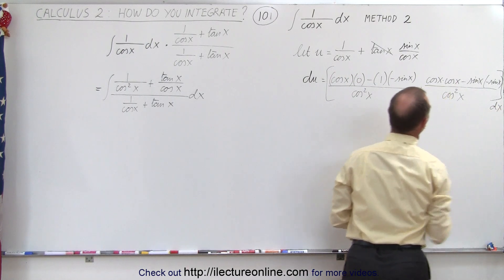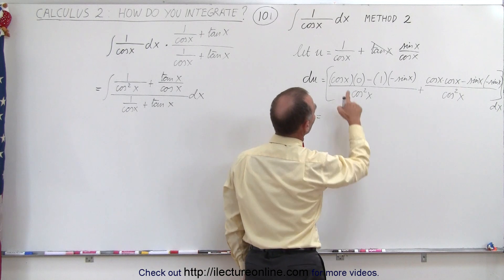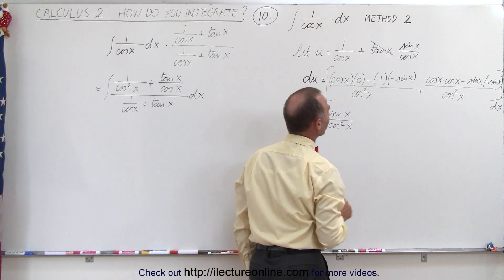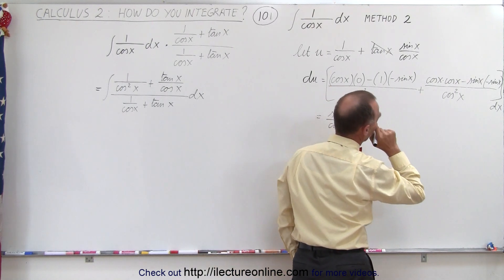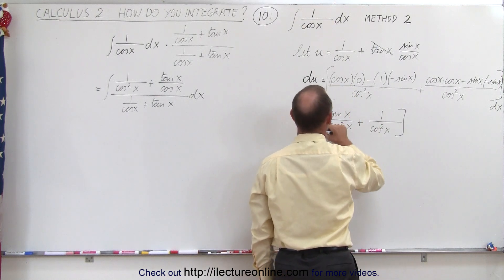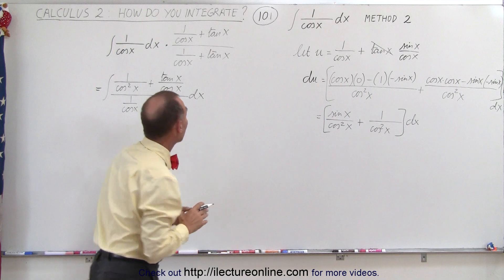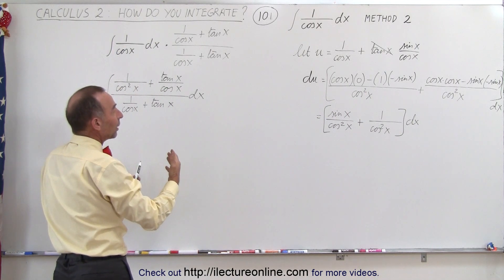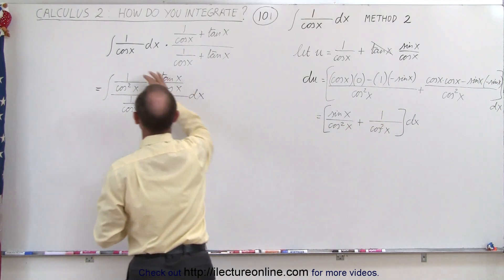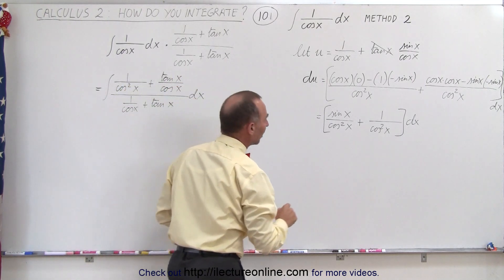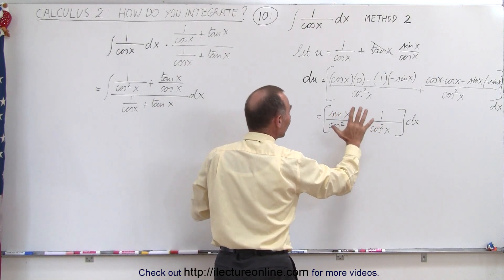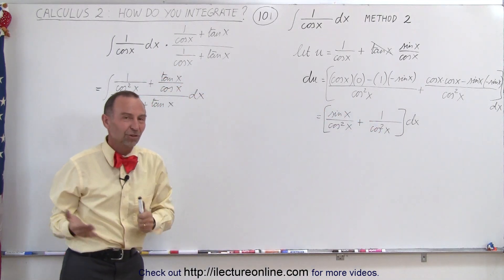We need a dx there as well. Simplifying this: the first part is 0, giving us the sine of x divided by cosine squared of x. And here in the numerator we get 1 divided by cosine squared of x, times dx. Notice we have 1 over cosine squared of x here, and the tangent of x divided by the cosine of x — which is sine of x over cosine times 1 over cosine — so this is exactly what we have in the numerator, just like in the previous video.